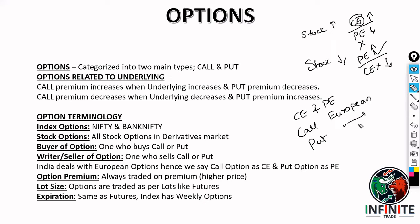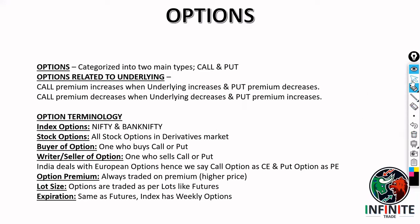Options are traded in lots, just like futures. The lot size of Bank Nifty is 25 and the lot size of Nifty is 50 — these lot sizes remain the same for futures as well as options. Option premium is always traded on a premium, meaning it is always priced higher. There are calculations like the Black-Scholes model, but despite all those calculations the premium is going to be definitely higher. Regarding expiration — all stocks have monthly expiries for futures and options, unlike indices like Nifty and Bank Nifty which have weekly expiries.